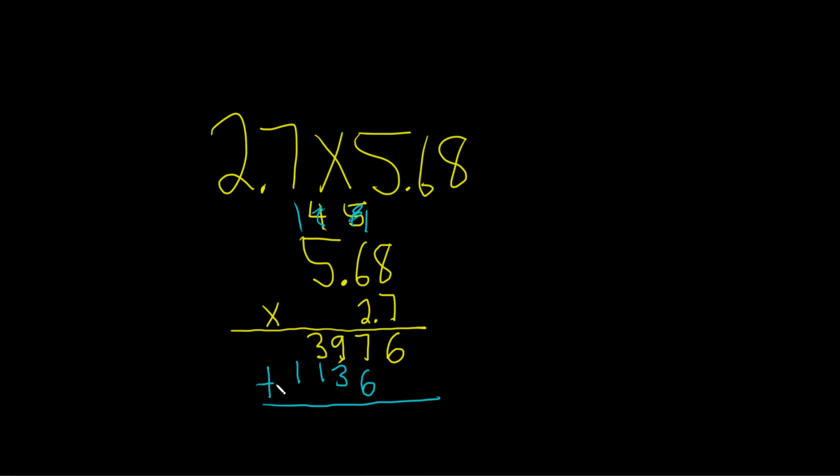Let's check our work. 2 times 8 is 16, carry the 1. 2 times 6 is 12, plus 1 is 13, carry the 1. 2 times 5 is 10, plus 1 is 11. All right. Now you can put a 0 here and then just add.